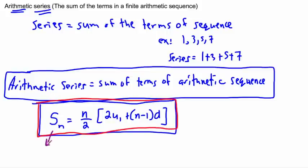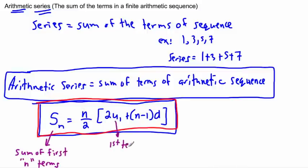So S_n is the sum of the first n terms. So if I want the sum of the first 20 terms, then it's S₂₀ — that's just the notation we use; S means sum. n is just that number we're looking for. u₁ is still the first term, because if it's arithmetic, it has a first term and a common difference. And d is still the common difference.